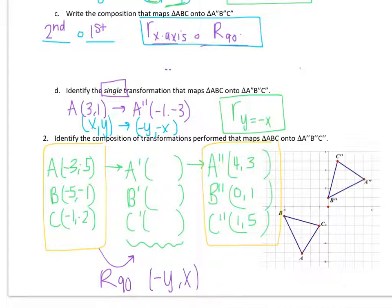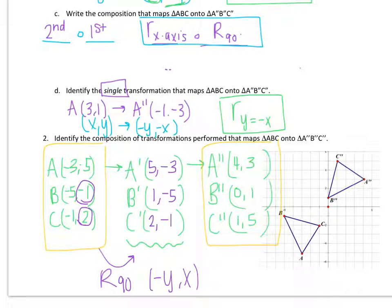I'll apply the rotation rule and plot the results. Taking (-5, -3): move -3 to the front and negate it to get positive 3, keep -5 — giving A prime at (5, -3). Taking (-1, -5): move -5 to the front, negate to get positive 5, keep -1 — giving B prime at (1, -5). For C: move -2 to the front, negate it, keep -1 — giving C prime at (2, -1).